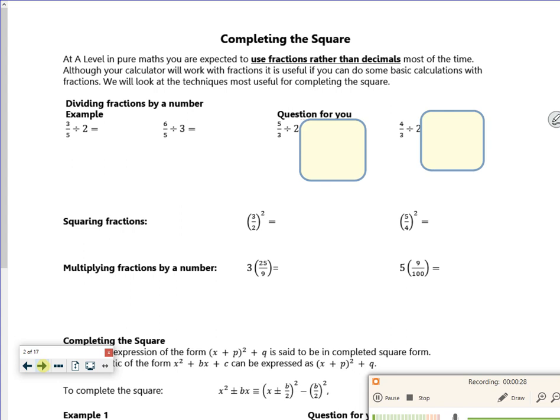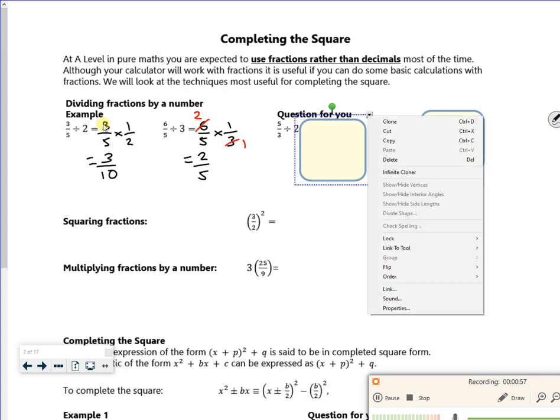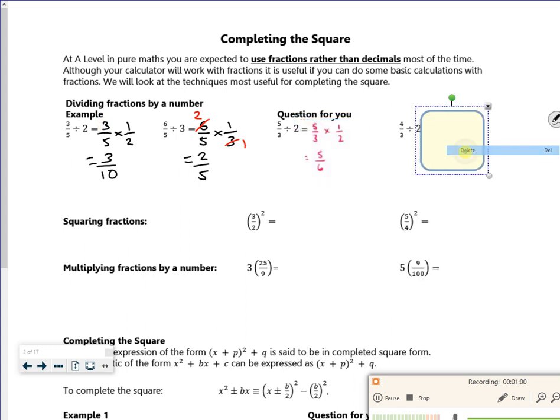So if I quickly zip through it, if I divide by 2, I can see it as times by a half, so it gives me 3 over 10. Another one here, divide by 3, so we've got 6 over 5 times a third, so what's quite nice is the 6 and 3 cancel, and that just gives me 2 fifths. So some questions for you, if you have a go at those and just check these answers, make sure that they're okay.